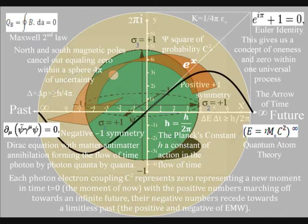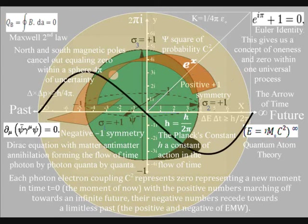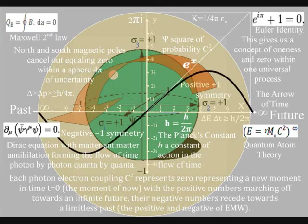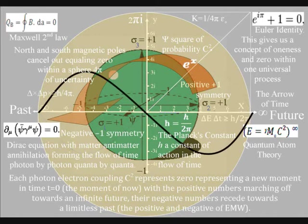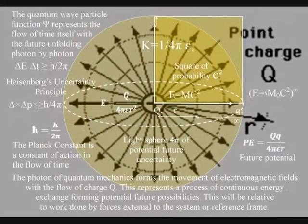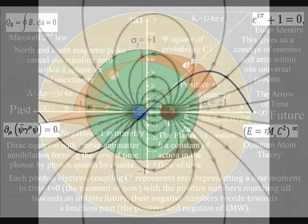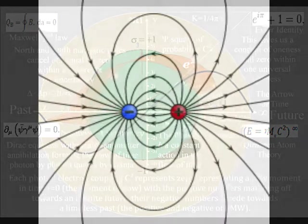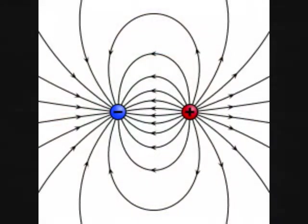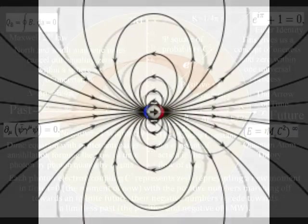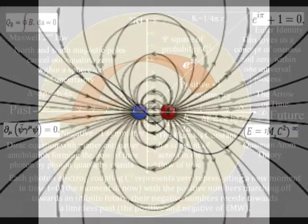In the top left-hand corner we have Maxwell's second law, with north and south magnetic poles cancelling out, equaling zero within a sphere of uncertainty. This forms the continuous flow of electric charge with the movement of electromagnetic fields. The electric fields will always be at right angles to the magnetic fields, because the momentum of light will always be at right angles to the surface of the sphere. This is represented on the diagram by the imaginary numbers being at right angles to the real numbers. In Maxwell's theory, any moving charged particle creates a magnetic moment, and because positive and negative charge is an innate part of matter that keeps cancelling out, this process is universal and continuous, forming a continuum of time moment by moment.